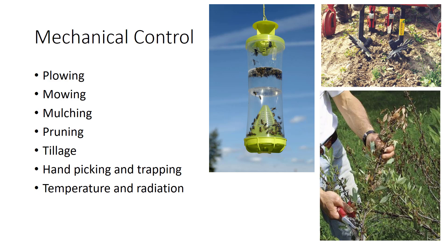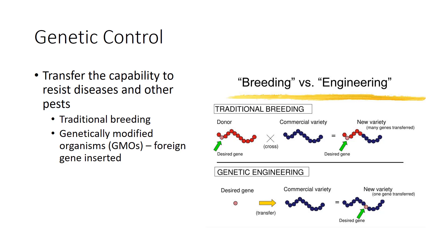Genetic pest control uses plant breeding and genetic engineering to manipulate plants to make them more resistant to specific pests. Through breeding efforts, researchers transfer the capability to resist diseases and other pests from the wild into cultivated species and from cultivar to cultivar. Today, resistant cultivars exist for most of the major pests of horticultural plants. Genetically modified organisms carry a foreign gene inserted by laboratory techniques into all of their cells. Genetic engineering is typically done for traits controlled by one gene, only a few genes, or a small cluster of genes. Traits that can be manipulated include resistance to herbicides, resistance to adverse environmental conditions, improved nutritional quality, flower colors, and resistance to viral infection.